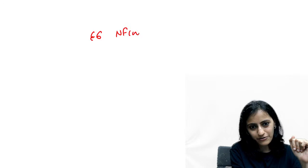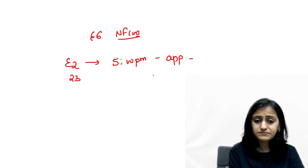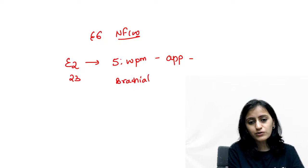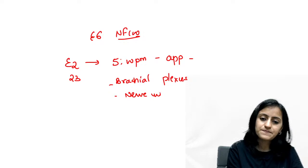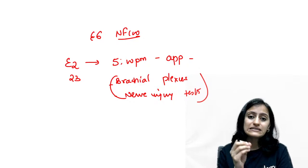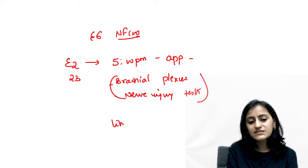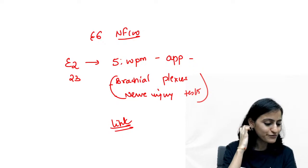This is episode one, and we're planning six episodes this month. Episode 2 is tomorrow at 5 PM on the Unacademy app — that's the 23rd — and the topic is brachial plexus and nerve injury tests, very very important. We'll discuss mnemonics to remember brachial plexus, and all the ulnar and median nerve tests. I'll drop the link in the comments and on the Telegram group so you can enroll.